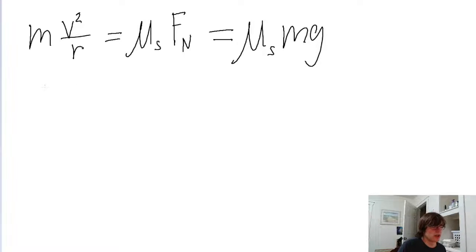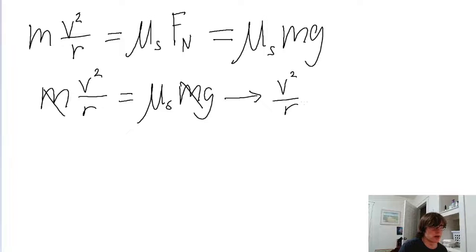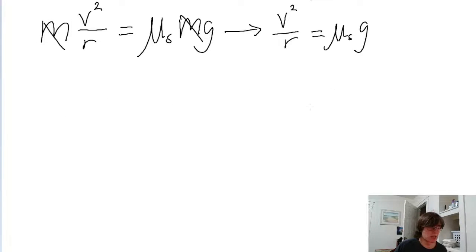So the final equation we're going to be solving is mv squared over r equals mu sub s mg. Now, the m's can cancel out because it's on both sides of the equation. And we're left with v squared over r equals mu sub s g. And we want to solve for the speed, as we established earlier.